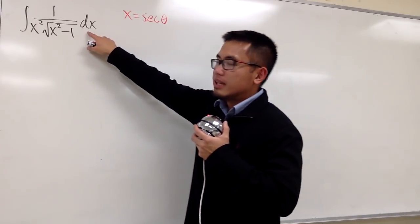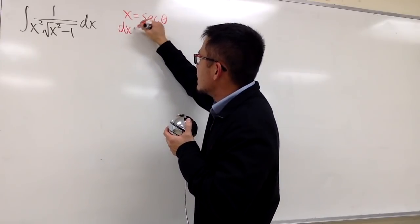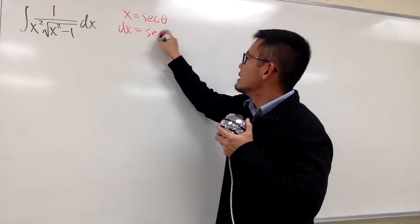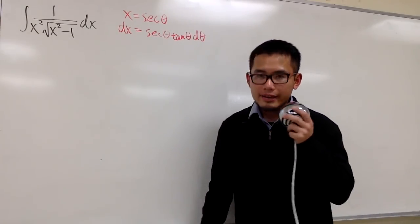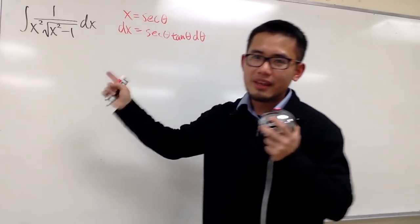And also, I need to get the dx. So let's look at this right here and differentiate both sides. We can get dx, which is going to be the derivative of secant theta is secant theta times tangent theta d theta. And now we are ready to take this integral from the x world to the theta world.